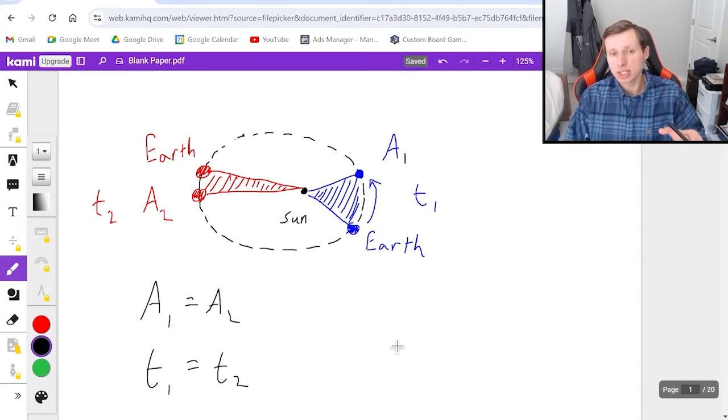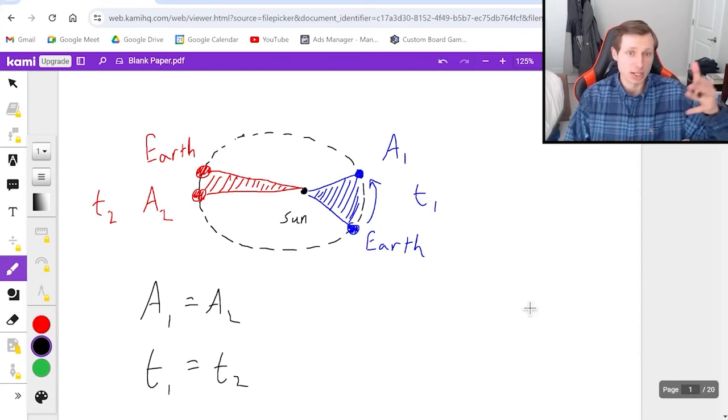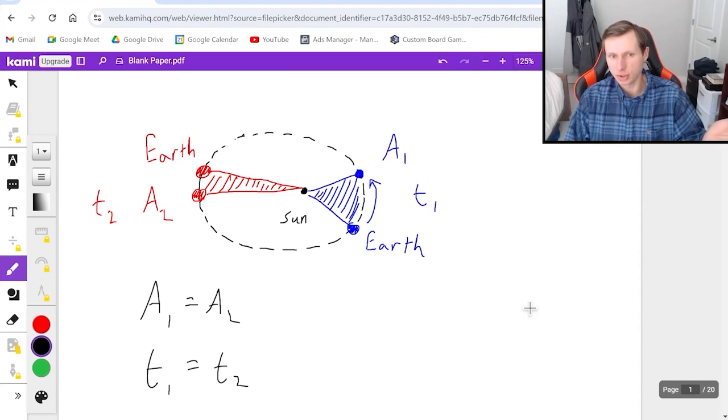We can then use this knowledge to say that, in general, the Earth is moving faster when it's closer to the Sun. And when it's farther from the Sun, it actually moves slower. And this is not just true for the Earth, it's true for any planet in an elliptical orbit. The closer you are to the Sun, the faster you move.